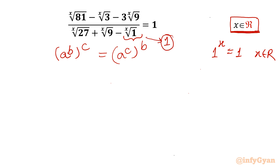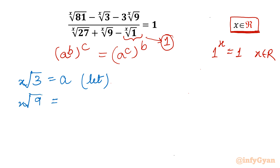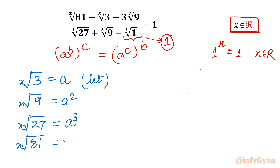Let's consider our substitution. I will write x-th root of 3 equal to a. Now let's write the remaining bases. x-th root of 9 must be equal to a squared; x-th root of 27 should be equal to a cubed; and x-th root of 81 we will write as a to the power 4.